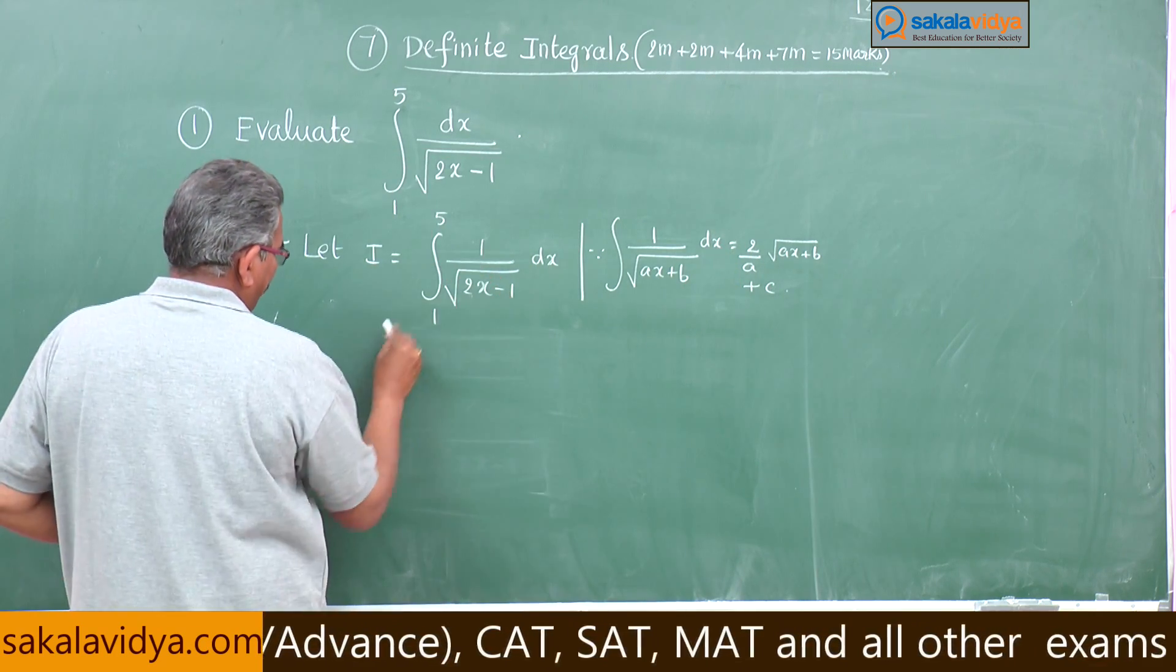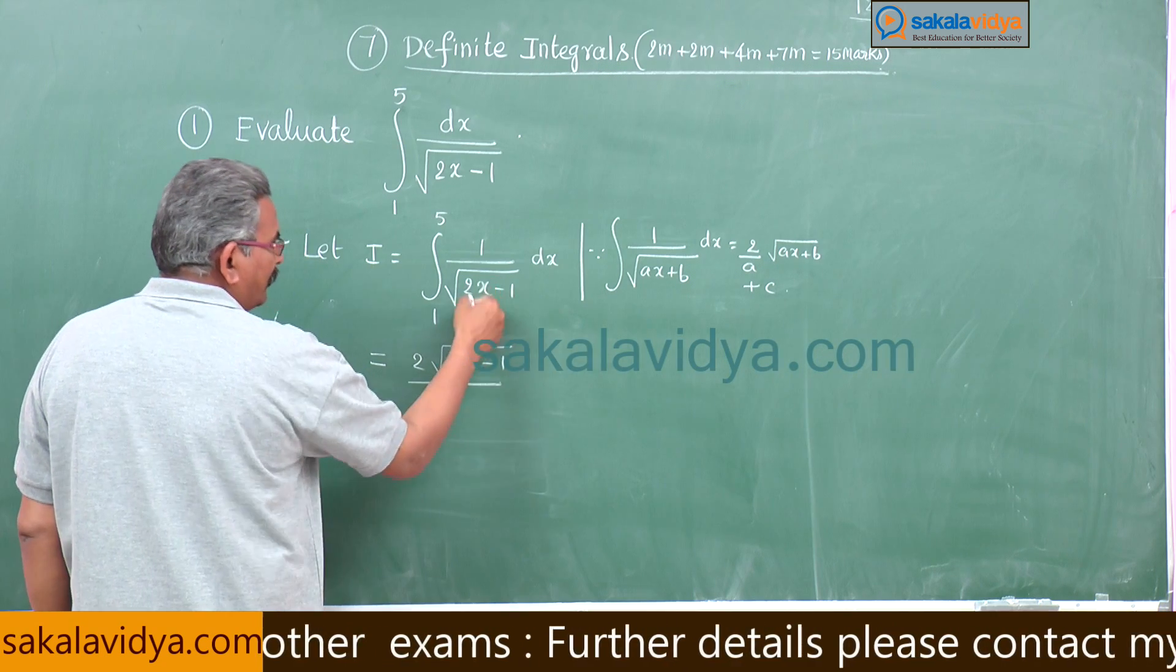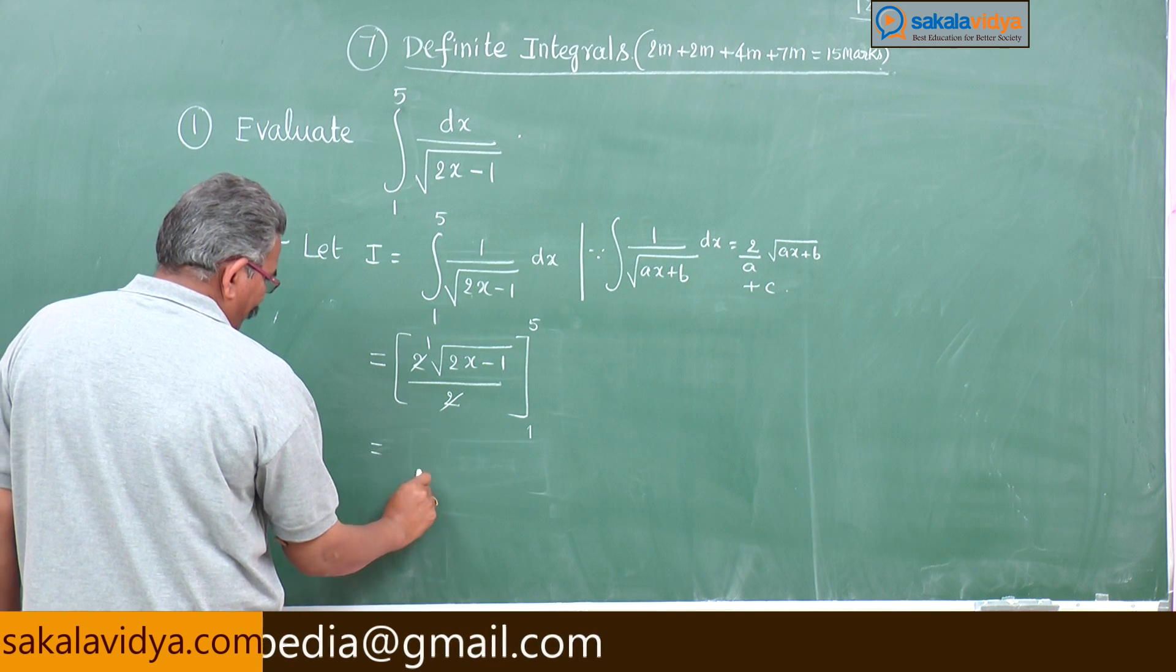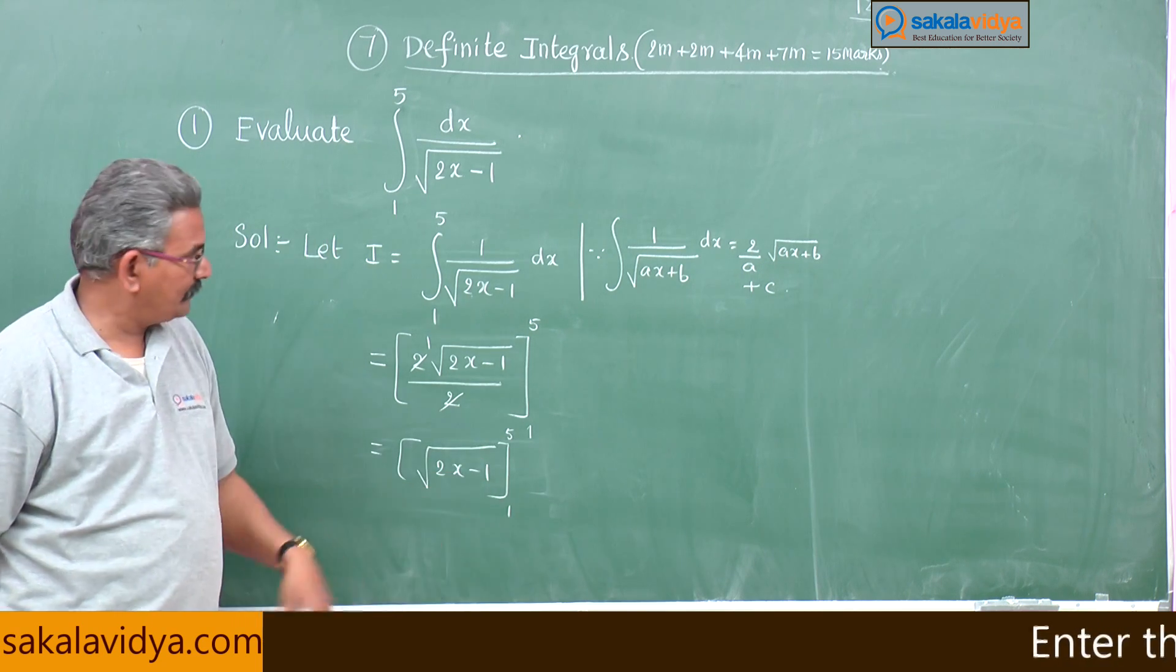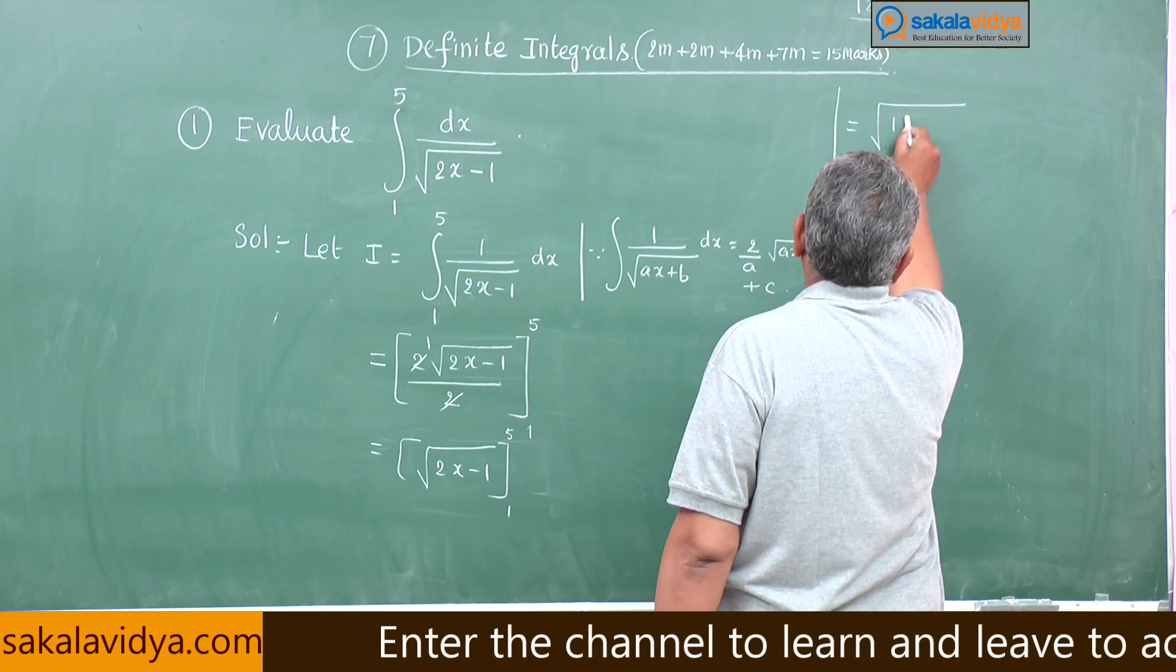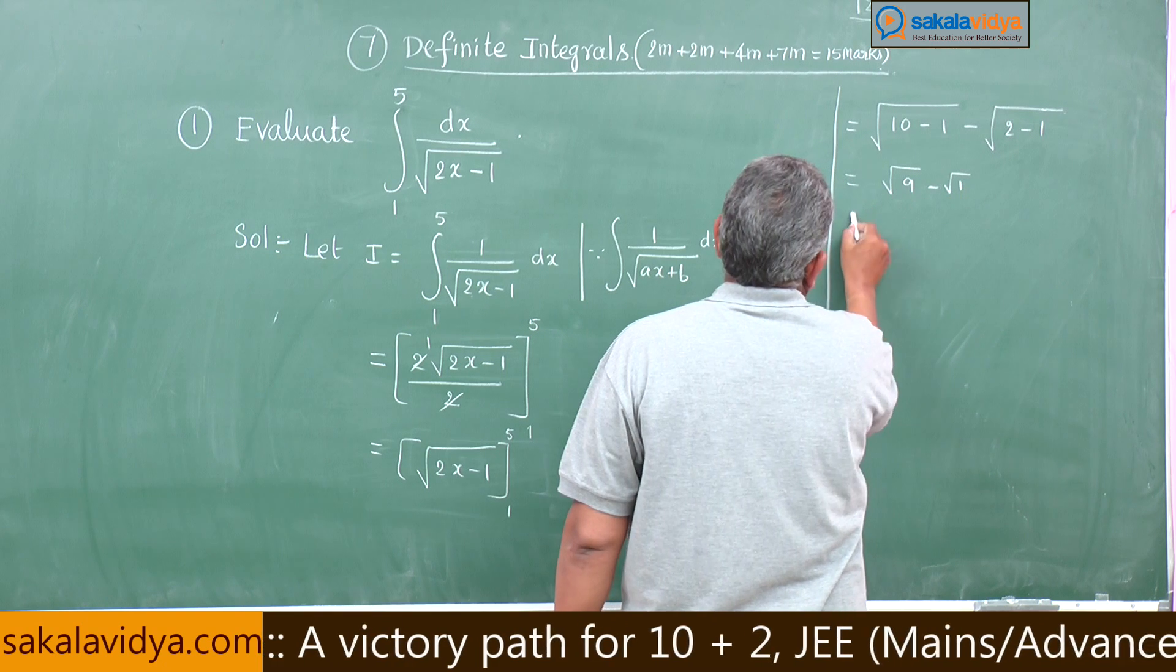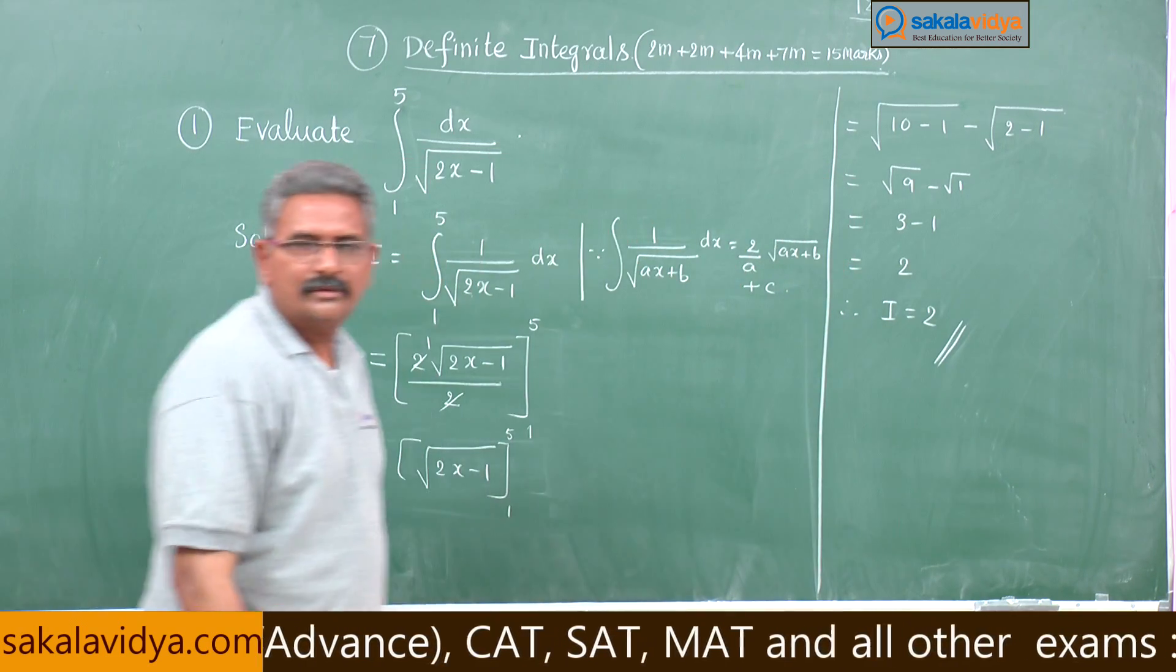That means this can be written first 2 root of 2x minus 1, the derivative of 2x minus 1 is 2 divide by 2, limits we have to apply between 1 to phi, 2 and 2 gets cancelled. Root of 2x minus 1 this is 1 to phi, first substitute phi. Now we get this is root of 2 phi minus 1 minus root of 2 times 1 minus 1, that is root 9 minus root 1, this is 3 minus 1, 2. Therefore I is equal to 2.